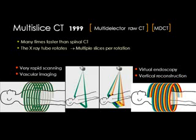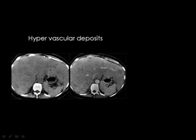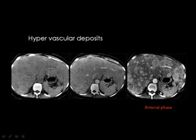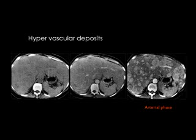You can imagine the speed of these machines — they can examine the whole body from head to toe in a few seconds or less than one minute. With these very fast machines, we are able to scan the liver while contrast material is in the arteries — the arterial phase — which was not feasible with spiral CT. All focal lesions are supplied by the hepatic artery, while normal liver parenchyma is supplied by the portal vein. Arterial phase scanning is now feasible with multi-detector CT.